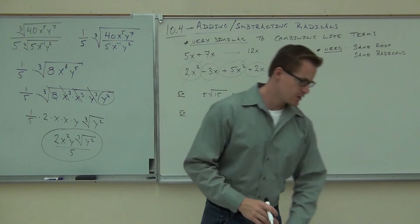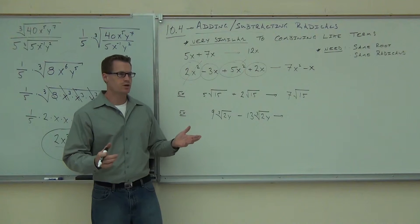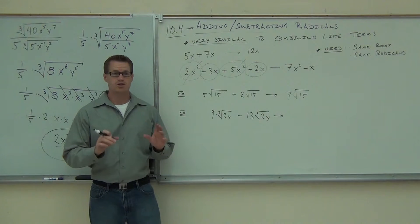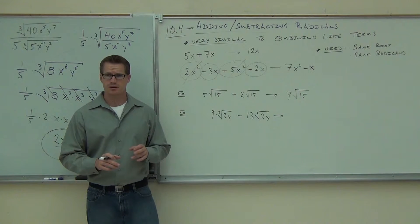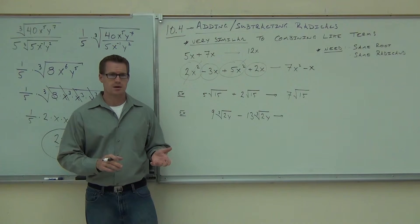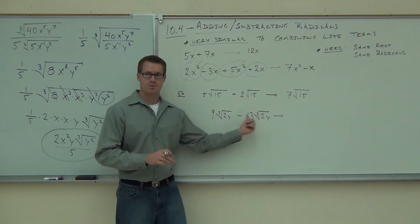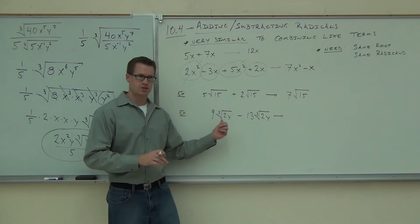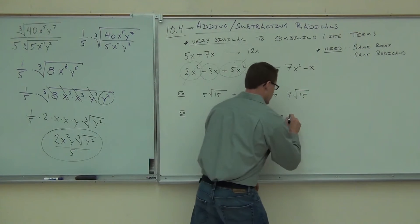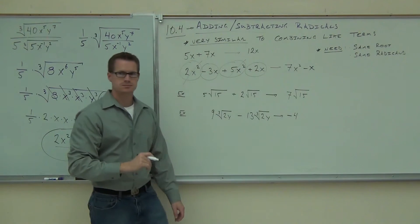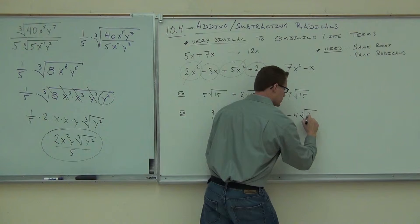9 cubed root 2y minus 13 cubed root 2y. The first thing you must check when trying to combine these radicals: do we have the same root? That is your exponent. And we also have to look for the same radicand. Do we have the same radicand? Yes. Can I combine these things? Yes. We look at the coefficients — 9 and negative 13. So we just look at 9 minus 13, which is negative 4. We get negative 4 — still a cube root, still of 2y. That's it.